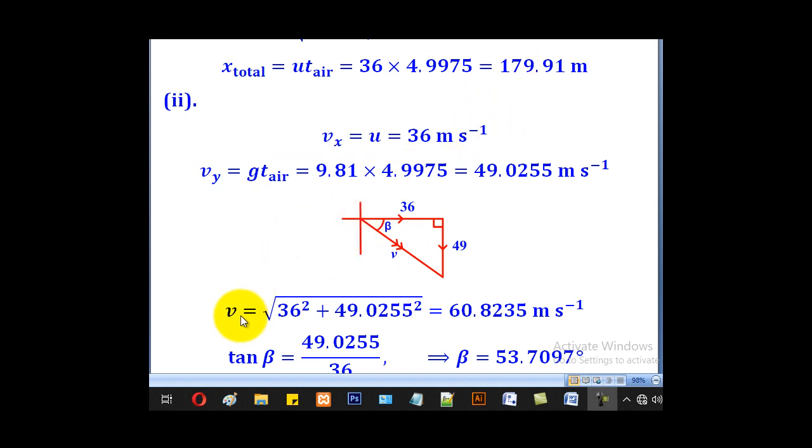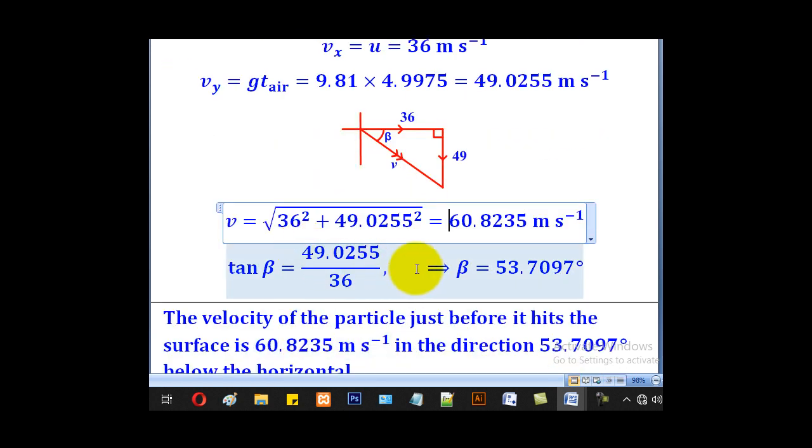Using Pythagorean theorem, we shall come up with v as 60.8235 meters per second. And for the direction, when this is beta, this will be the opposite, this will be the adjacent. So tan beta will be equal to opposite over adjacent. And therefore, our beta will be 53.7097 degrees.